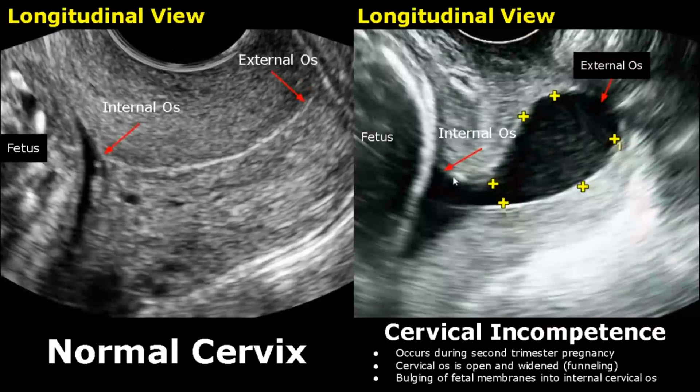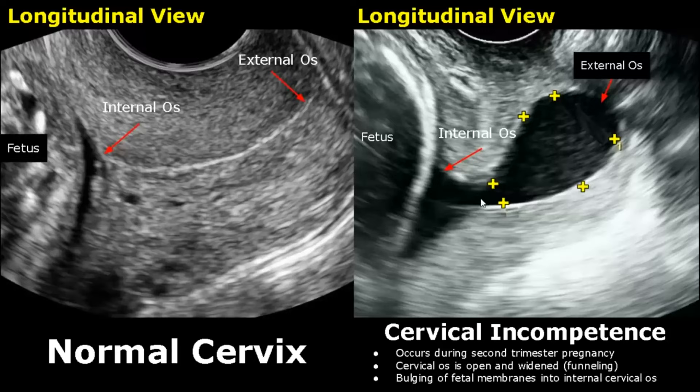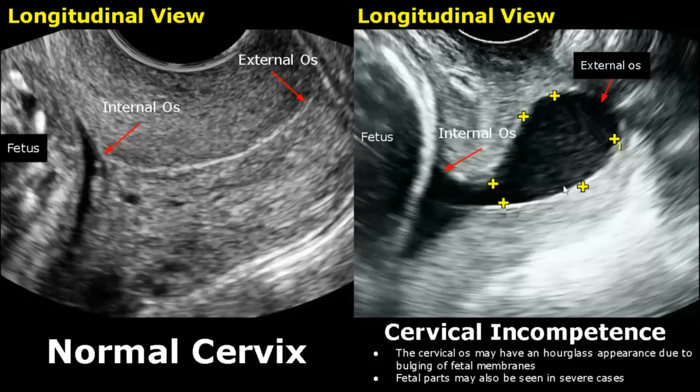In cervical incompetence, the cervix becomes dilated and this can cause second-trimester pregnancy failure. The cervical os will be open and become widened — this widening is called funneling — due to bulging of fetal membranes into the internal cervical os. The appearance of the cervical os can have an hourglass appearance. In severe cases, fetal parts or even the umbilical cord may be found in the cervix.